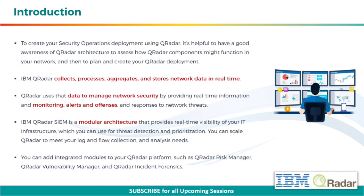QRadar uses that data to manage network security by providing real-time information and monitoring, alerts and offenses, and responses to network threats. IBM QRadar SIEM is a modular architecture that provides real-time visibility of your IT infrastructure, which you can use for threat detection and prioritization. You can scale QRadar to meet your log and flow collection and analysis needs. You can add integrated modules such as QRadar Risk Manager, QRadar Vulnerability Manager, and QRadar Incident Forensics.